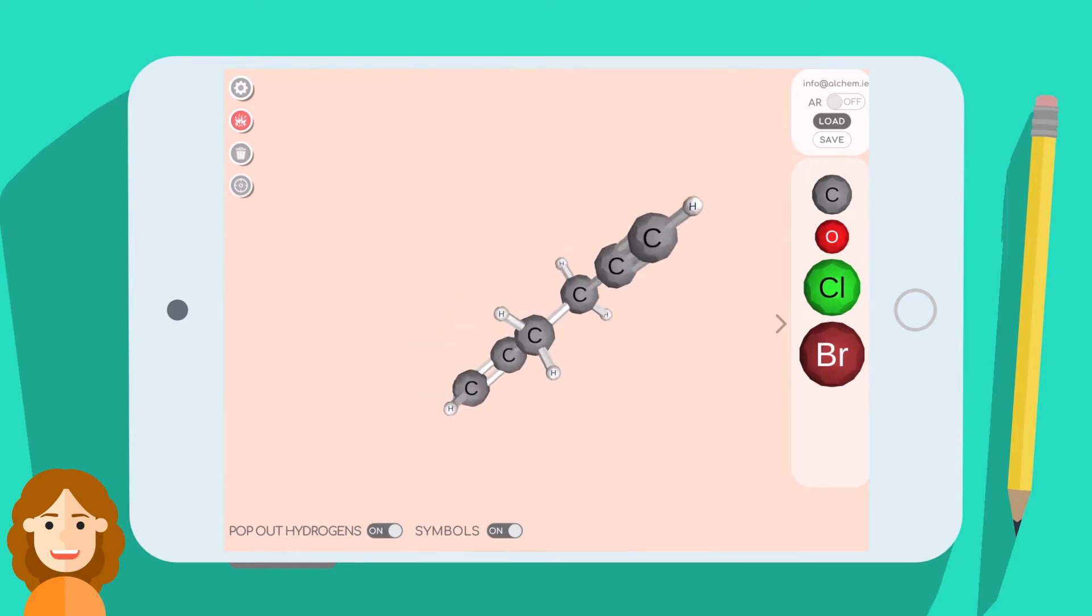Notice how the carbons with all single bonds are tetrahedral, the ones with double bonds are trigonal planar, and the carbons that are triple bonded are linear.